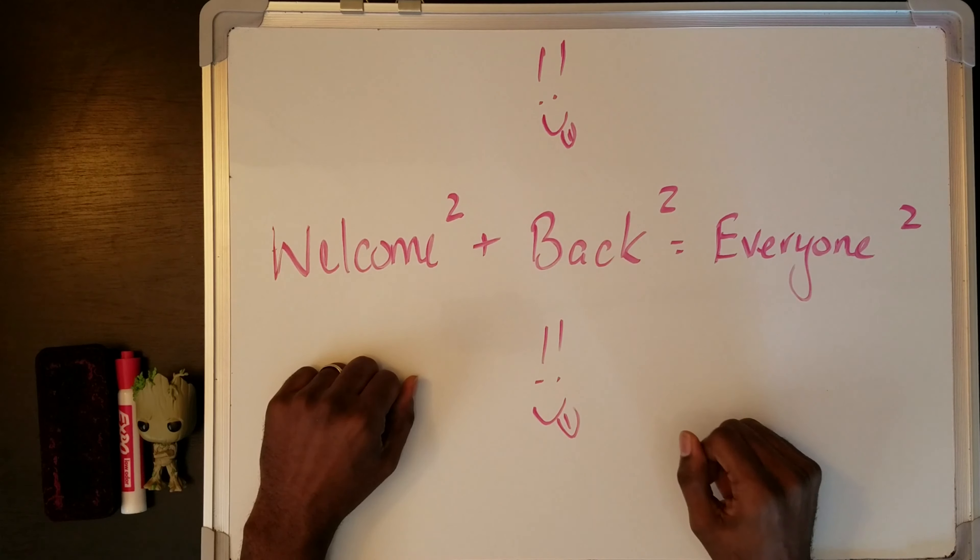Now, what is the Pythagorean theorem? We talked about using it when we have a right triangle, and we also said we need at least two sides — but why? Well, the Pythagorean theorem tells us that A squared plus B squared equals C squared. That is the formula. A and B are going to be what we call legs — the two sides of a right triangle that are not the hypotenuse.